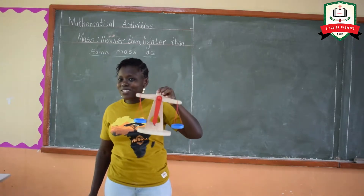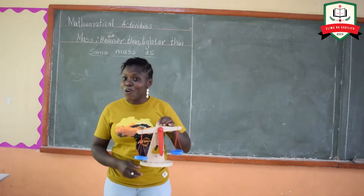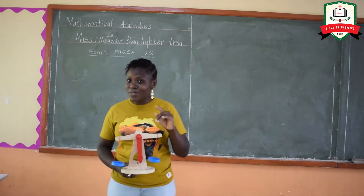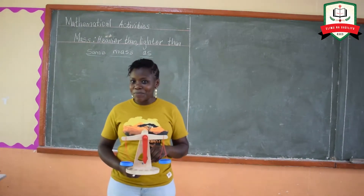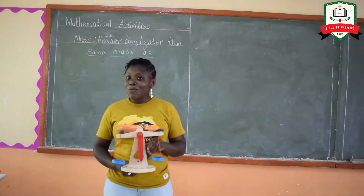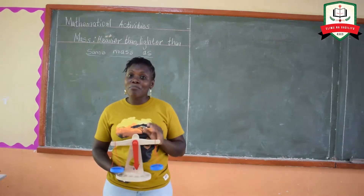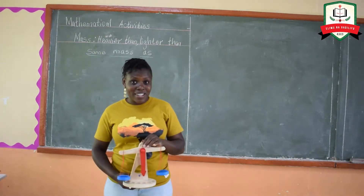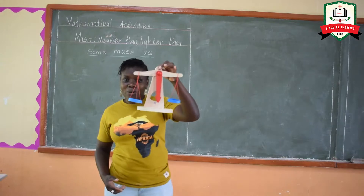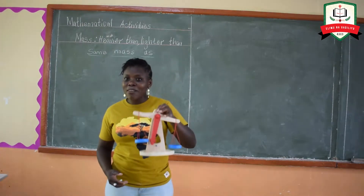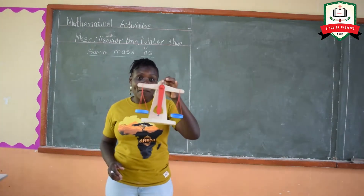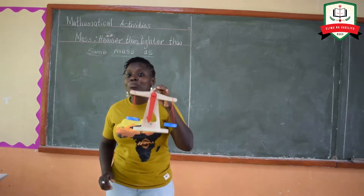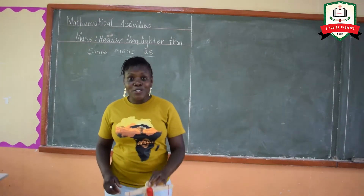Can you still remember this instrument? I showed you — it was on Tuesday. Can you still remember it? We had an instrument called a beam balance. That one was big, it looked like a cross. Today I am using a better one — smaller but the best. This is a beam balance. It is used to compare masses.